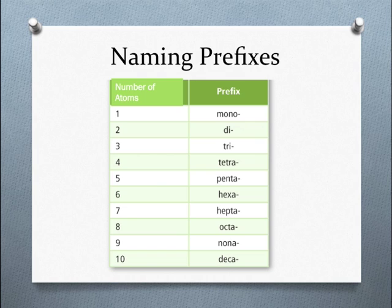The prefix di- is used for two atoms. A triangle has three sides, so the tri- prefix means three. Four is tetra, which is where the game Tetris gets its name for the bonus achieved when you clear four lines at once.